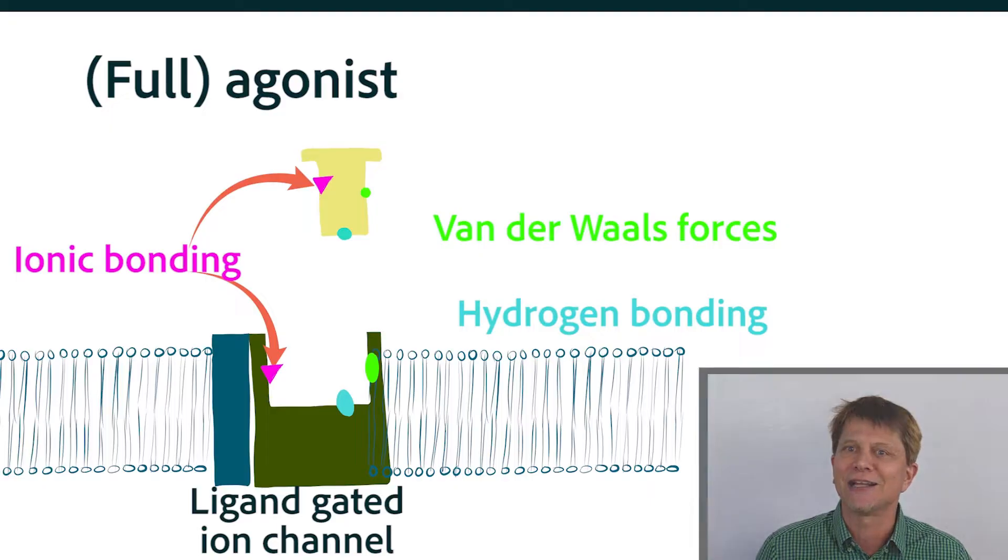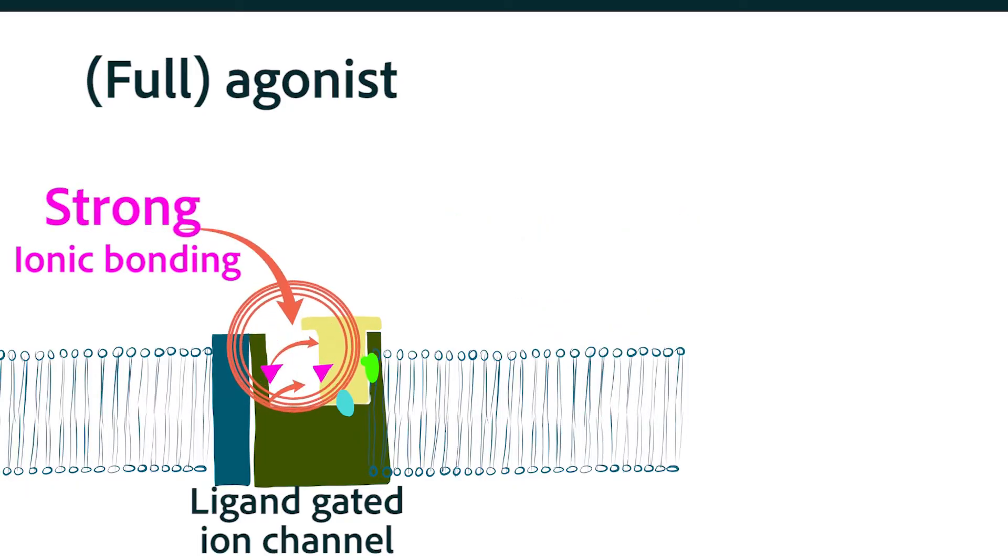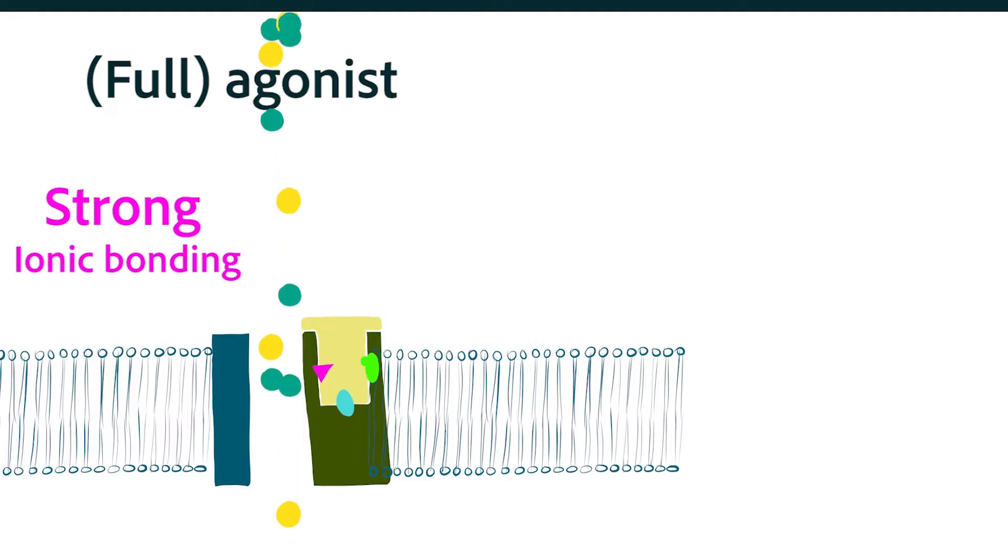In this example, the ligand-gated ion channel, this portion of the molecule pulls together, opening up a channel and allowing calcium or other ions from outside the cell to travel through the channel into the cell.